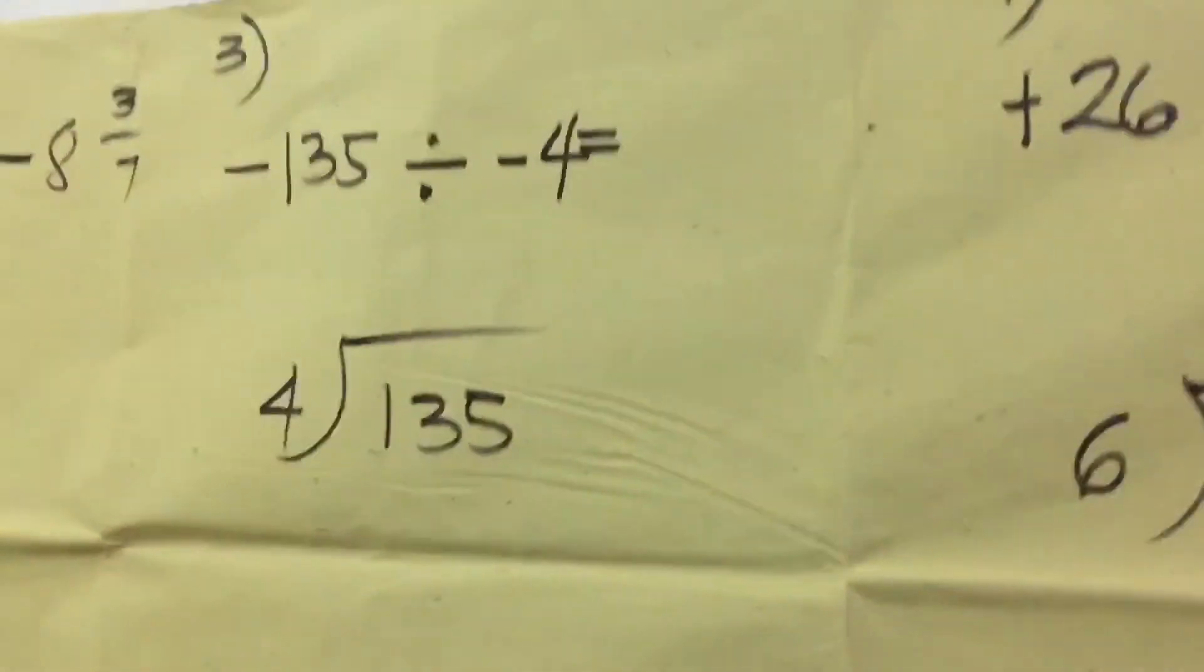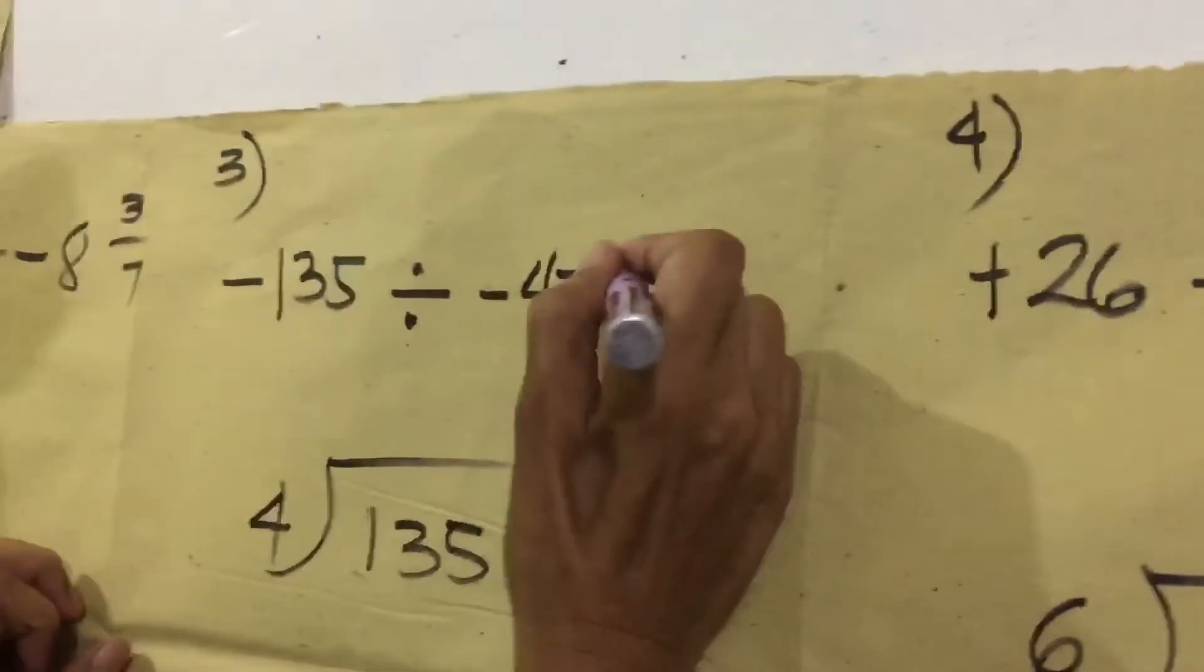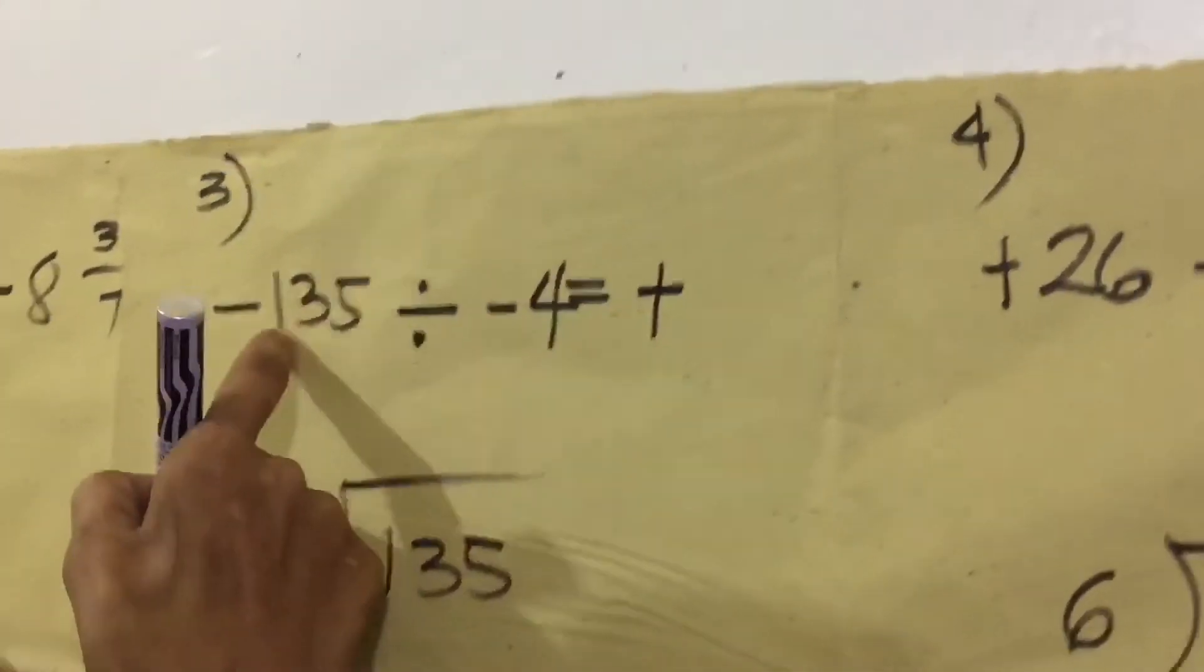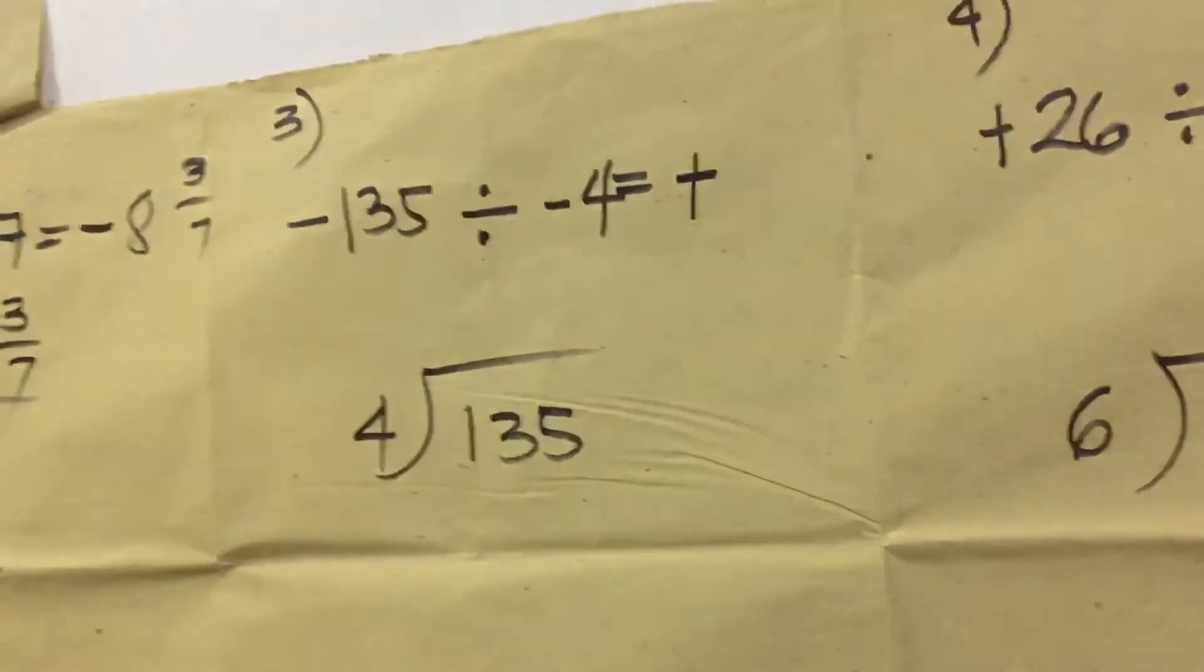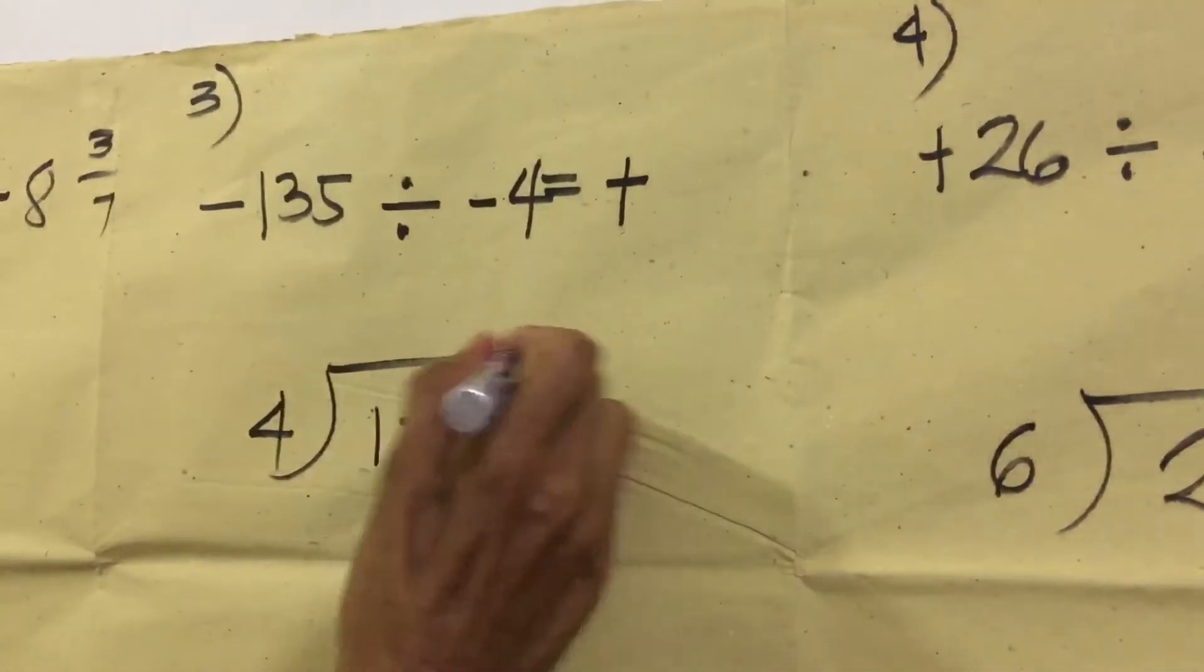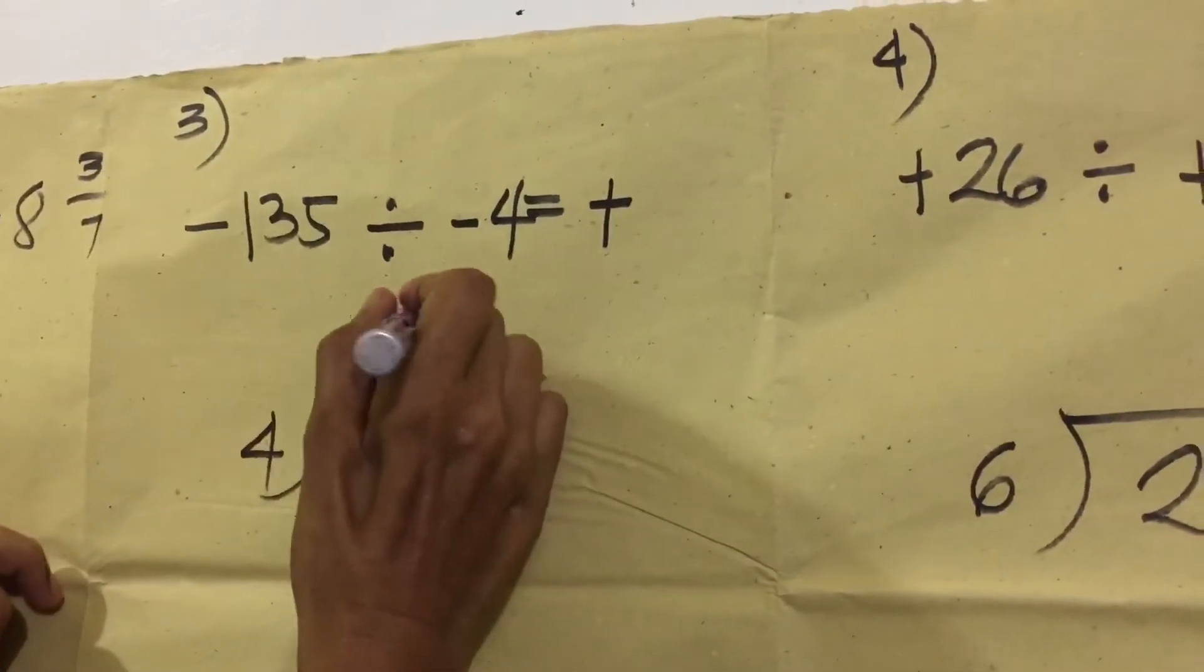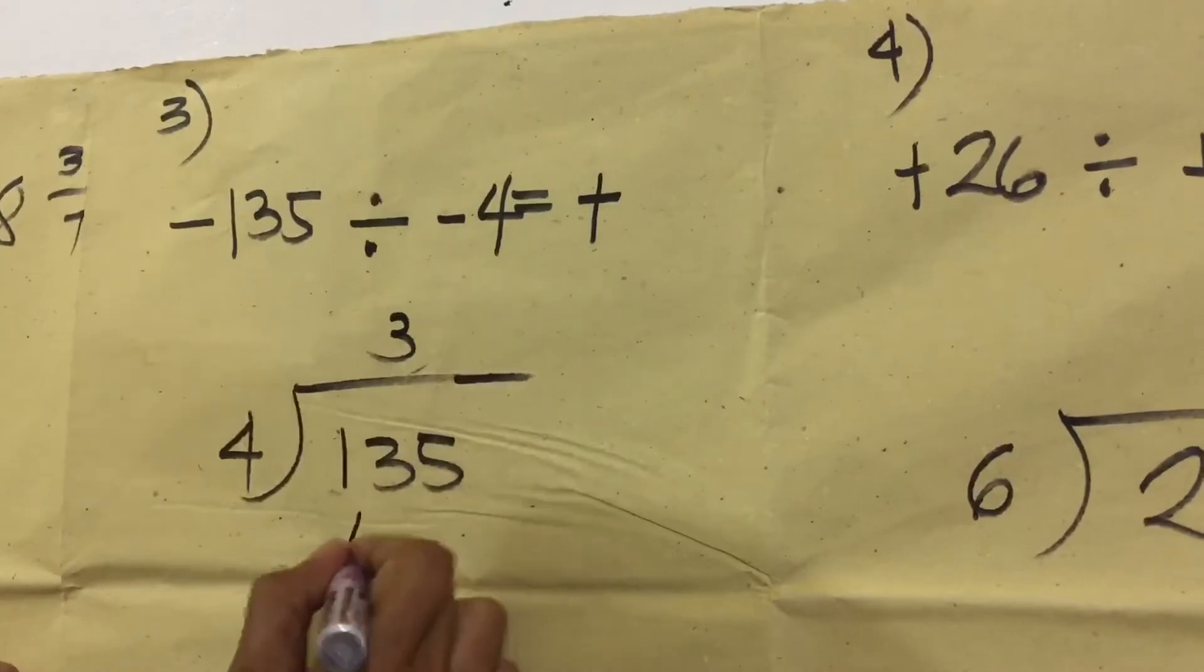Number 3. Negative divided negative equals positive. Then, divide 135 divided by 4. Wala nang sign na isasalya para hindi kayo man ito sa sign. 13 divided by 4 is 3. 3 times 4 is 12.